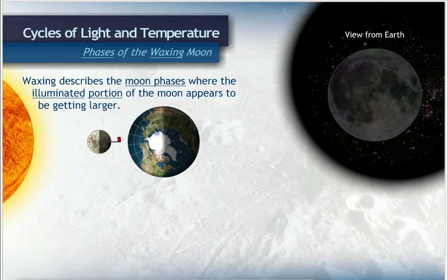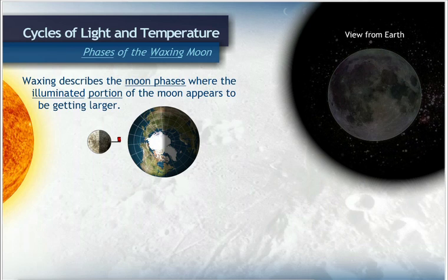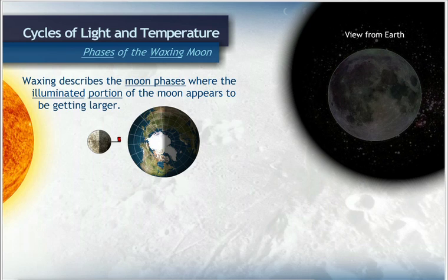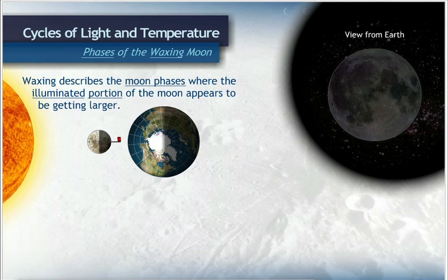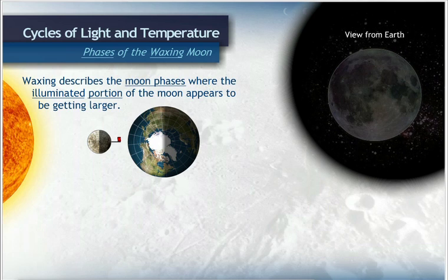Remember that waxing describes the moon phases where the illuminated portion of the moon appears to be getting larger. The moon is waxing from the point that it is at new moon until it reaches full moon.